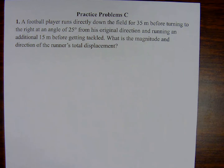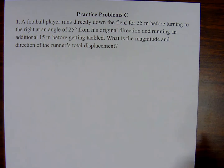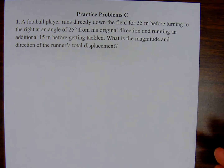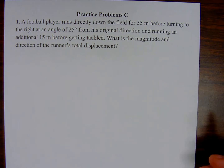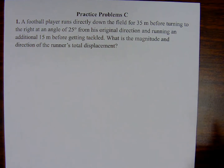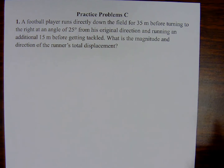A football player runs directly down the field for 35 meters before turning to the right at an angle of 25 degrees from his original direction and running for an additional 15 meters before getting tackled. What is the magnitude and direction of the runner's total displacement?